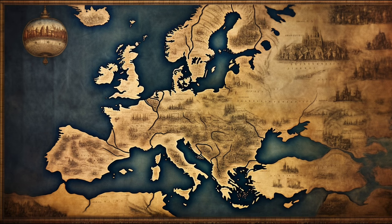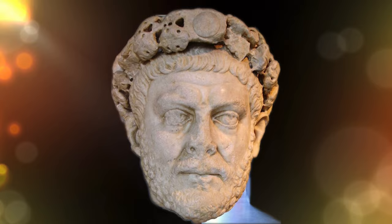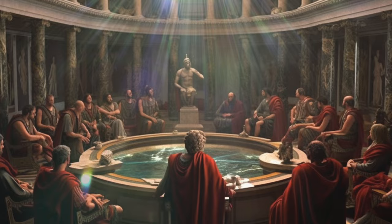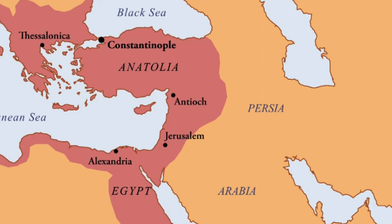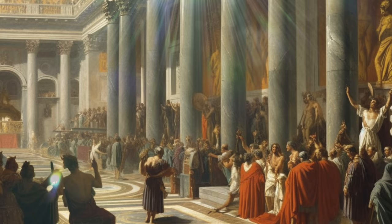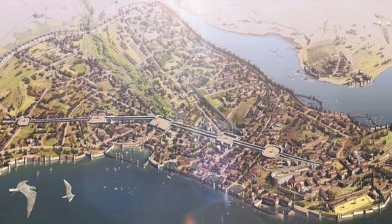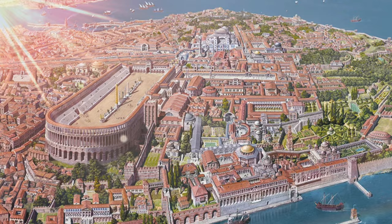Recognizing the logistical challenges of governing such an expansive territory from a single center, Emperor Diocletian made a pivotal decision in 285 AD. He divided the Roman Empire into the Eastern and Western Roman Empires. While both halves shared cultural, legal and military practices, this division was a practical solution for administrative and defense purposes. The Eastern Roman Empire, with its rich provinces in Anatolia, Egypt and the Eastern Mediterranean, began to flourish. Trade routes brought wealth, and cities like Antioch and Alexandria were buzzing with activity. But the star of the show was a city named Byzantium, which would later be renamed Constantinople, laying the foundation for the Empire's new identity.